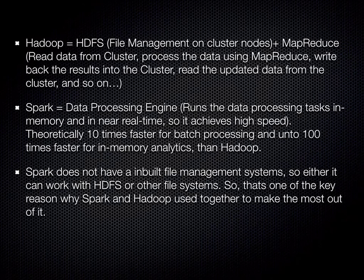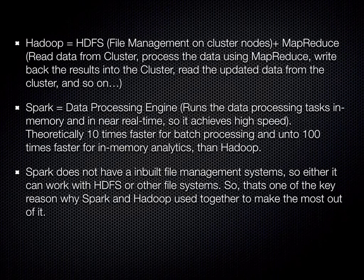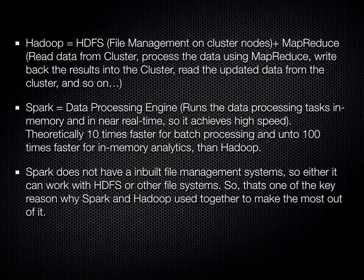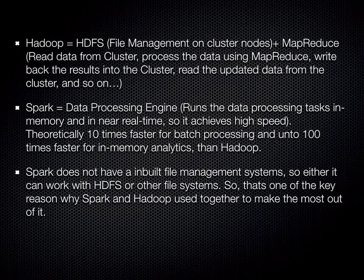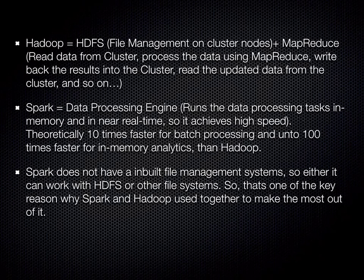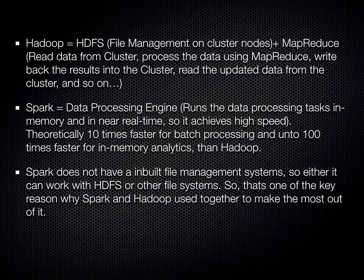Hadoop consists of two different parts: a file system and the MapReduce algorithm. The file system used in Hadoop is called HDFS, which is Hadoop Distributed File System. MapReduce is the data processing algorithm. It reads data from the cluster, processes it using MapReduce, and then writes back the results into the cluster. Next time it reads the updated data, runs the MapReduce task, and writes back results — and this continues.